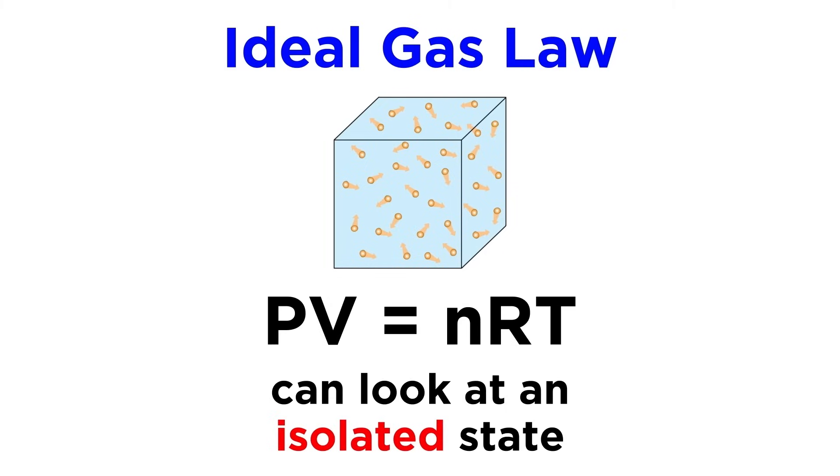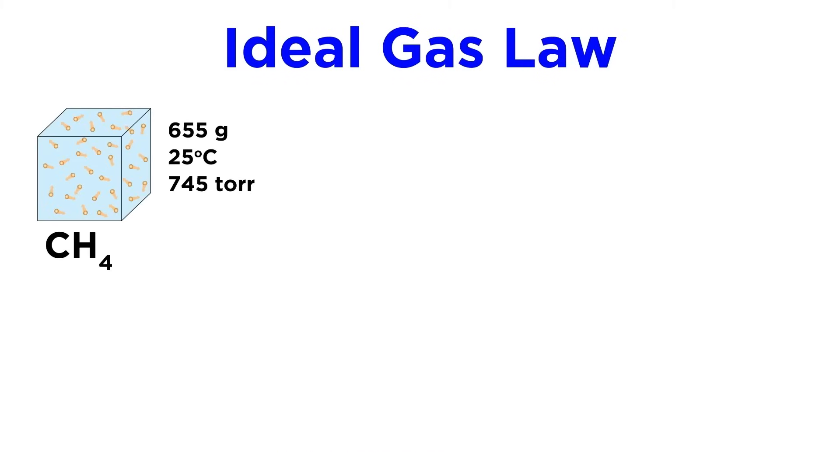We simply need to know the other three quantities. For example, let's say we have 655 grams of methane gas at 25 degrees celsius and 745 torr. What must be the volume of this sample?